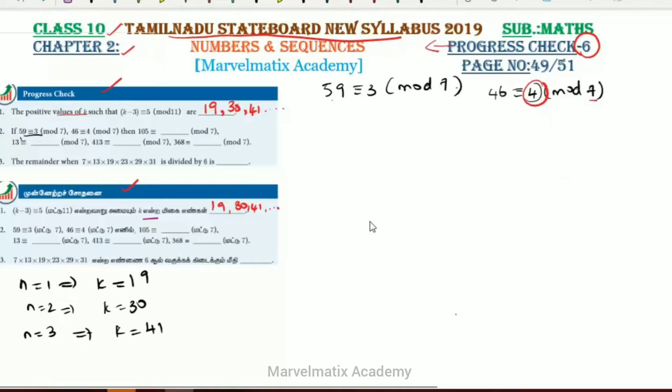Next problem: find the remainder when 105 is divided by 7. 7 times 7 is 49, then 7 times 5 is 35. The remainder is 0. So the first question's answer is 0.